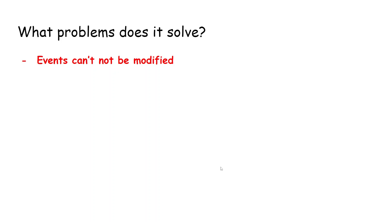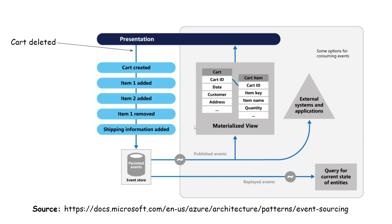If I want to modify the state, here is what it looks like. We have an event called 'cart created'. If a user wants to modify the state, the only way to do that is to append a new event — for example, an event called 'cart deleted' — and append this event to the event store to modify the state.